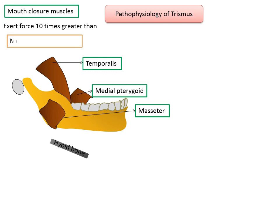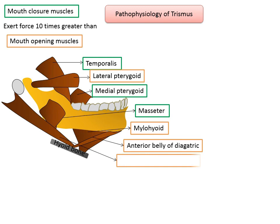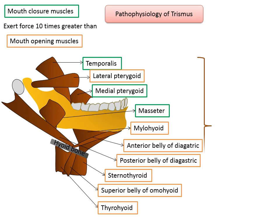The mouth-opening muscles include the fourth muscle of mastication, the lateral pterygoid, and the hyoid muscles — the suprahyoid muscles, which are the mylohyoid and the digastric (both anterior and posterior belly), and the infrahyoid muscles, which are the sternothyroid, superior belly of omohyoid, and thyrohyoid. These muscles together are known as guarding muscles.